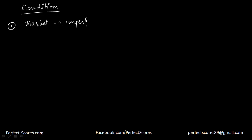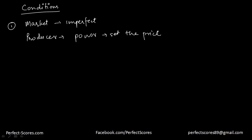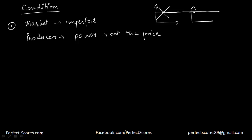What do we mean by the market being imperfect? That means the producer has the power to set the price. It should not be a perfect competition market. As you've seen in perfect competition videos, in perfect competition the price is determined by the industry.